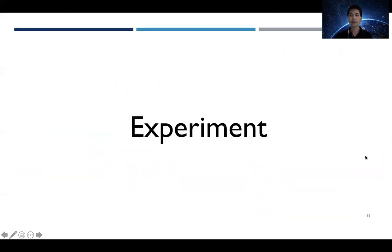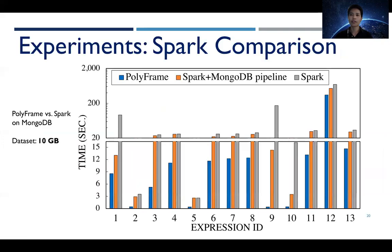We have also conducted a set of experiments. First, on a single workstation, we performed a set of benchmark expressions that can be found in our paper on both PolyFrame and Spark reading from the same MongoDB instance. I will not go into details of how these queries are constructed, but we have discussed all of them in detail in our paper. But the takeaway here is that processing of the queries by the database system allows PolyFrame to take advantage of database optimizations and data locality to achieve the best performance across all tested expressions.